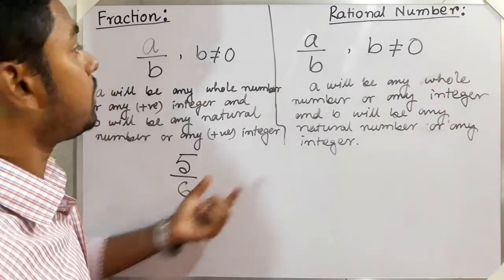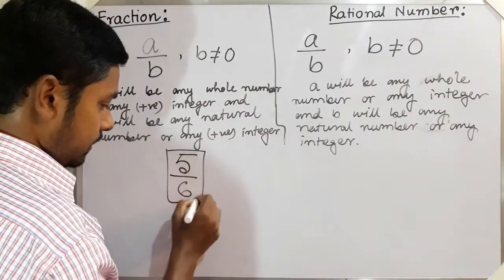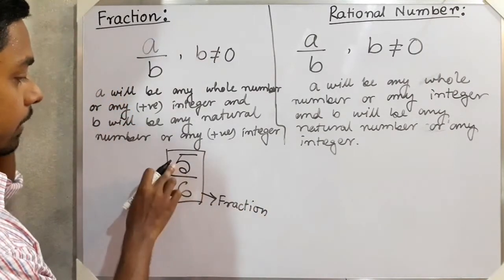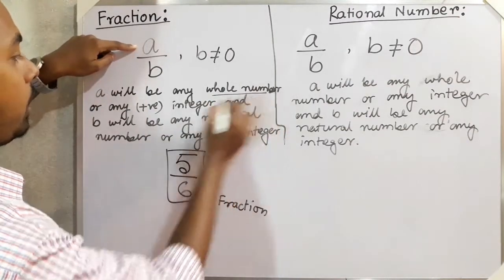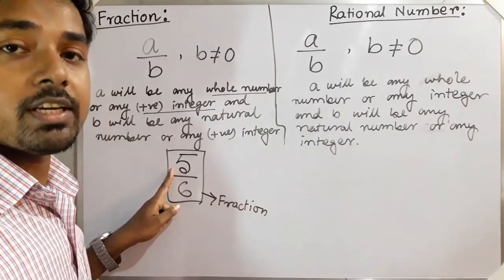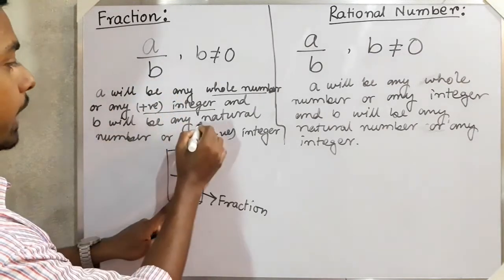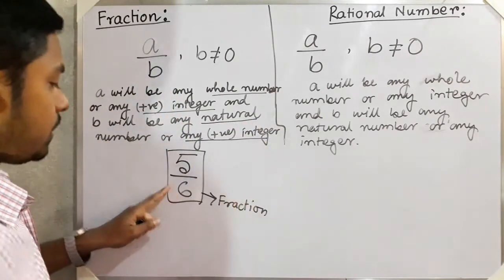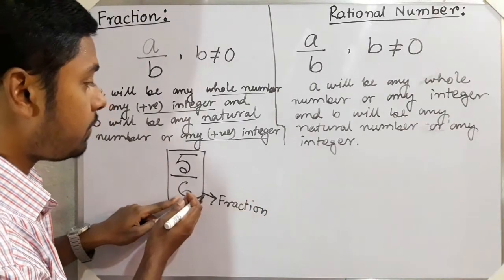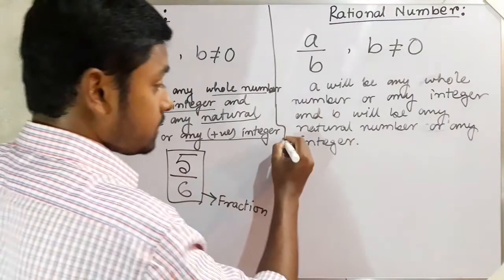Suppose I take 5/6. Is it a rational number or a fraction? In this condition, it is a fraction. Why? Because a = 5 is a whole number and a positive integer, and b = 6 is a natural number and a positive integer. So 5/6 is a fraction.